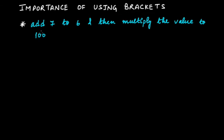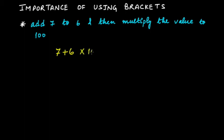For example: add 7 to 6 and then multiply the value by 100. You have to add 7 and 6 first, and then whatever the result is, multiply it by 100. Suppose you wanted to write it in the form of an expression — add 7 to 6, that means 7 plus 6, and then multiply the value by 100. You wrote it like this to get the mathematical expression.